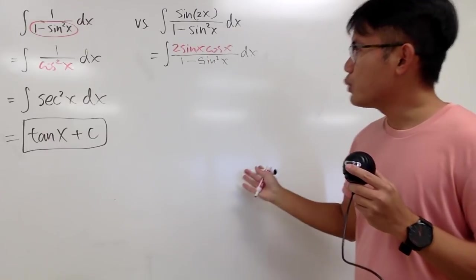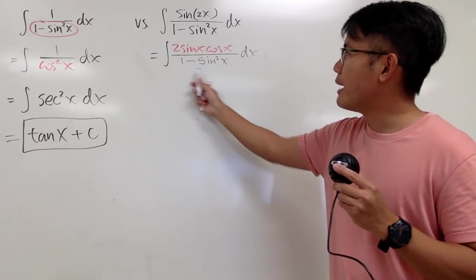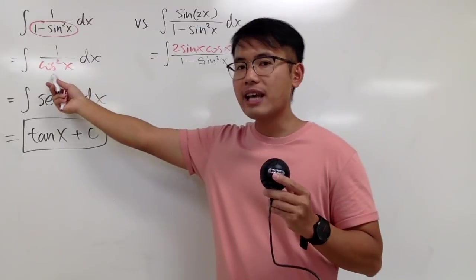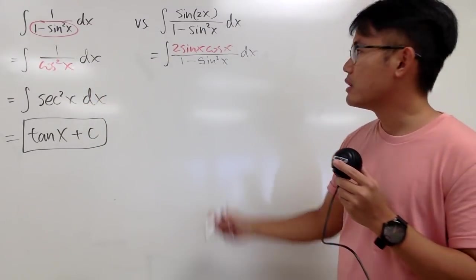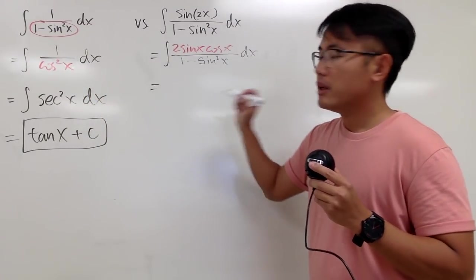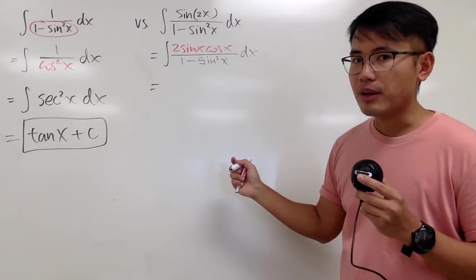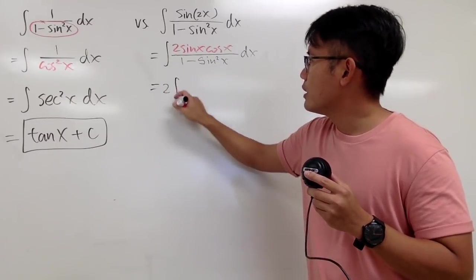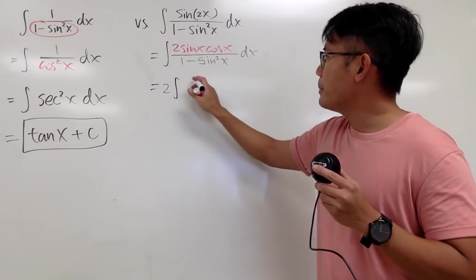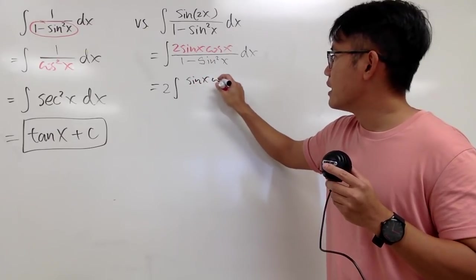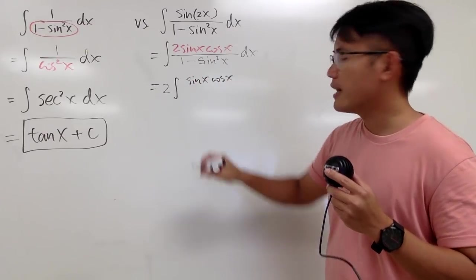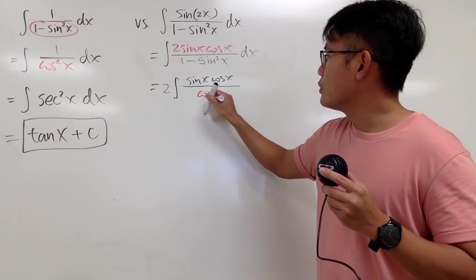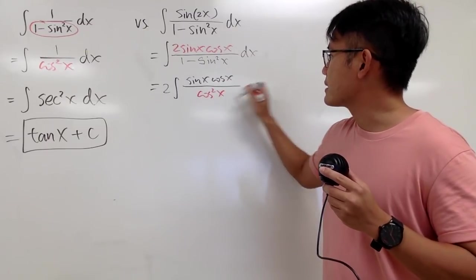The first way is I can look at 1 minus sine squared x as cosine squared x, just like what we did earlier. So this is the same as the following: first, bring the 2 to the front, and then the integral — the top is still sine x times cosine x, and for the bottom, this is cosine squared x.